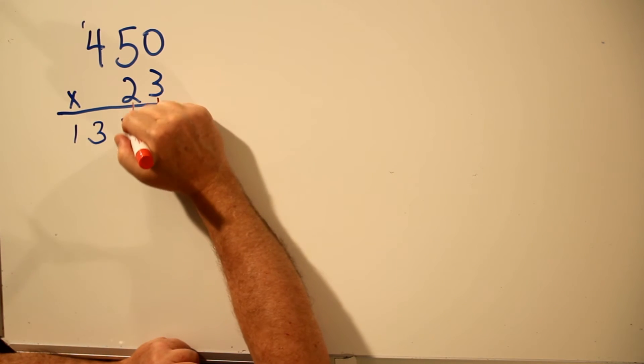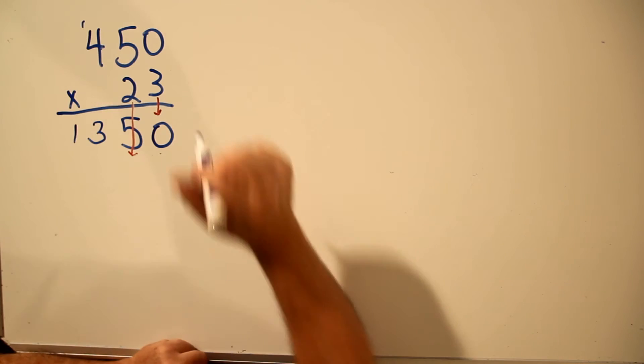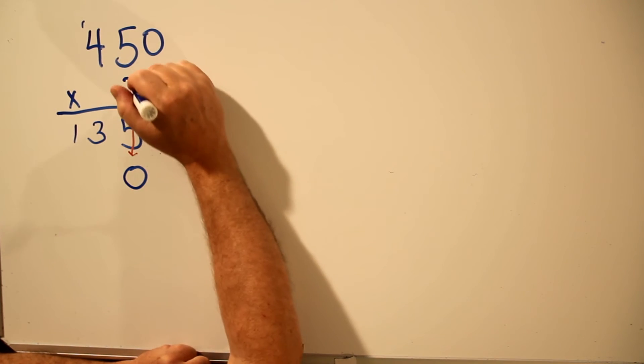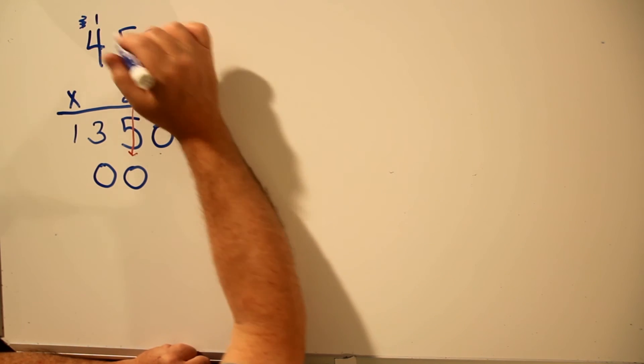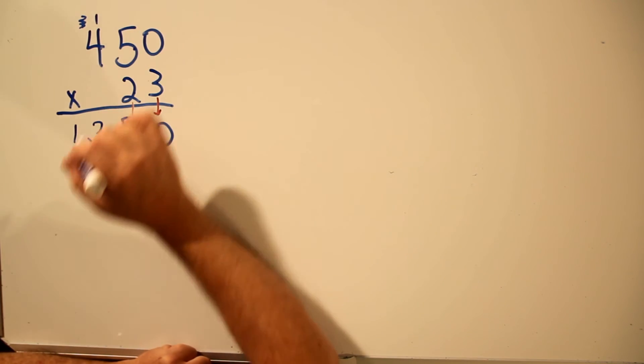Next, we use the 2 in its own row. Write the answer underneath the 2. 2 times 0 is 0. 2 times 5 is 10. We'll write down the 0 and carry the 1. Multiply and then add. 2 times 4 is 8. Plus 1 is 9.